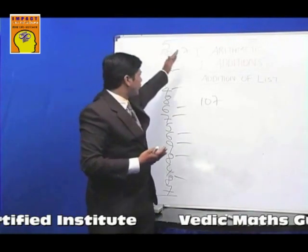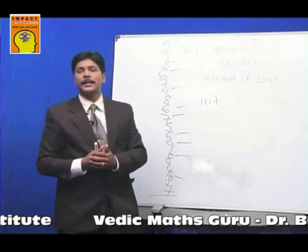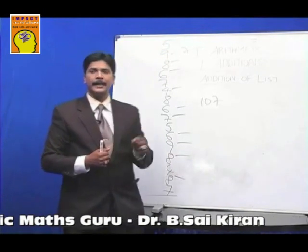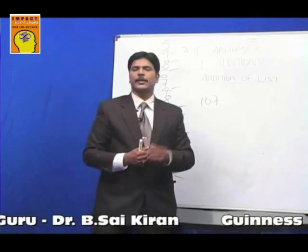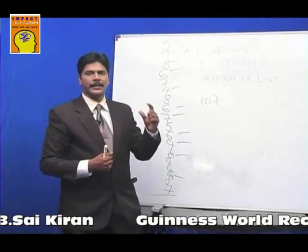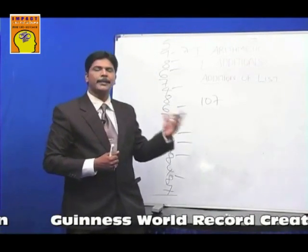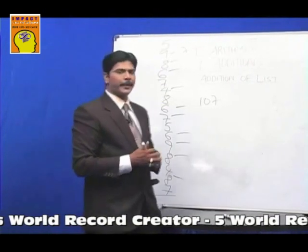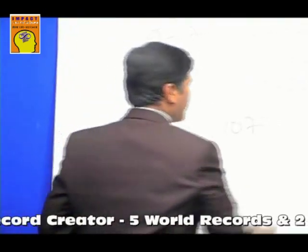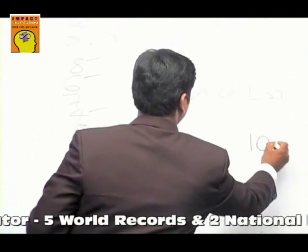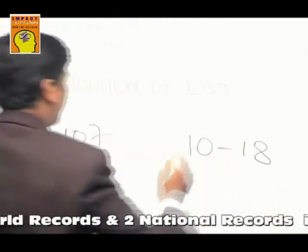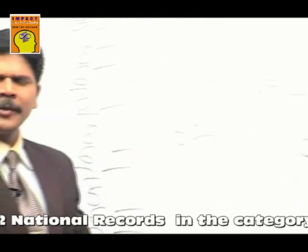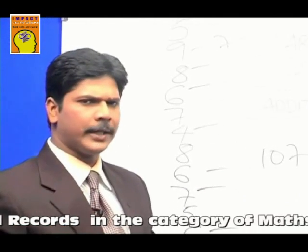This technique in Vedic mathematics is known as the Rekhaankana paddati — Rekha means line. The same technique translated into English becomes 'dropping tens.' Now, what is dropping tens? We will always get a total between 10 and 18 only, not more than that. We will always get from 10 to 18.